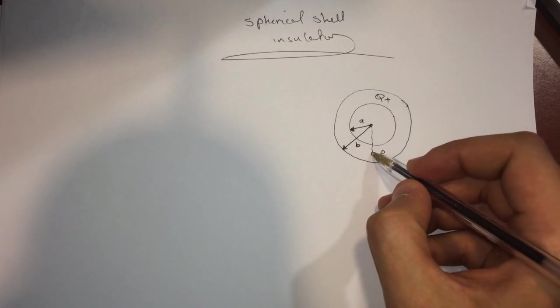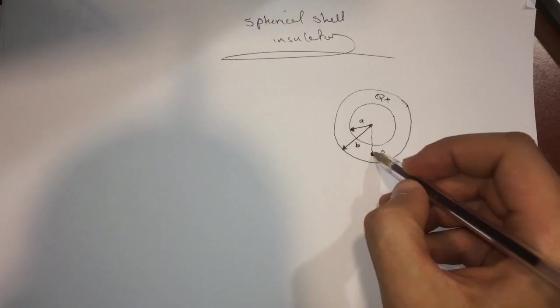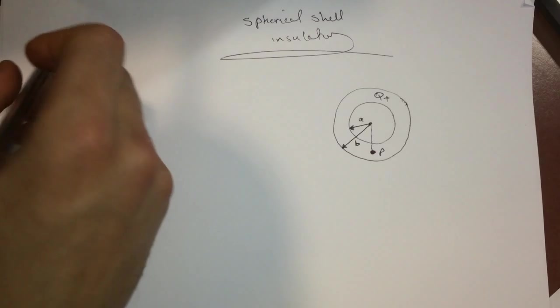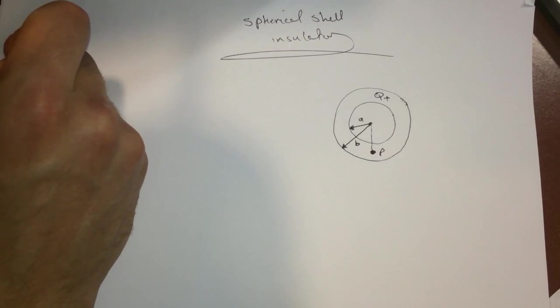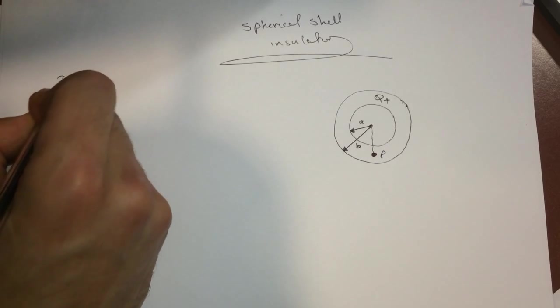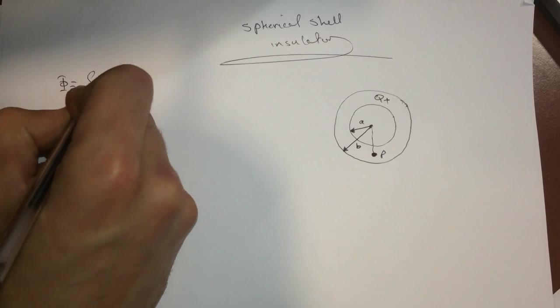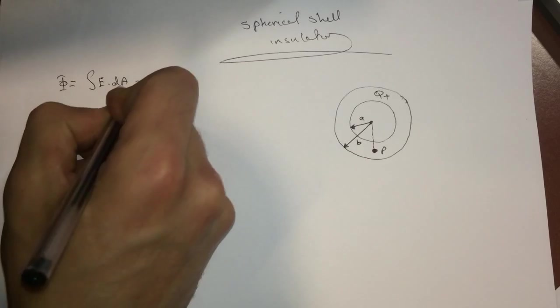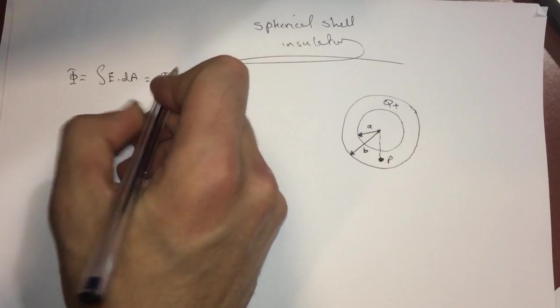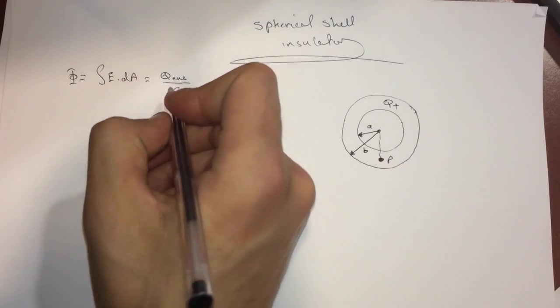Alright, so we're going to use Gauss's law, which is the flux is equal to the integral of E dot dA equal to Q enclosed divided by epsilon not.